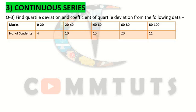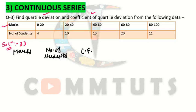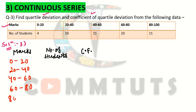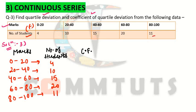The first step: you will be given data in the question. Here, we have marks in class intervals — 0 to 20, 20 to 40, 40 to 60, 60 to 80, and 80 to 100 — along with the corresponding number of students (frequency). The frequencies are: 4, 10, 15, 20, and 11 respectively.